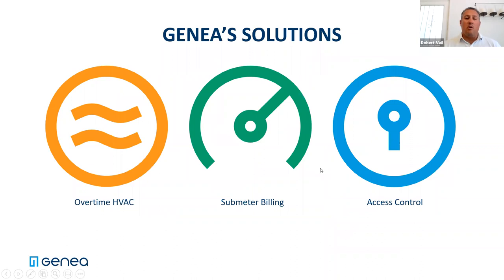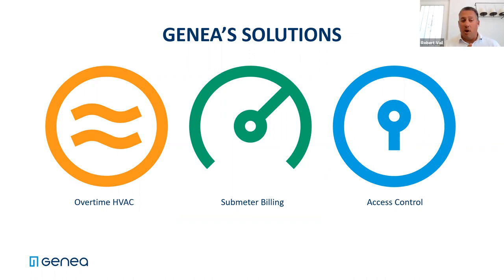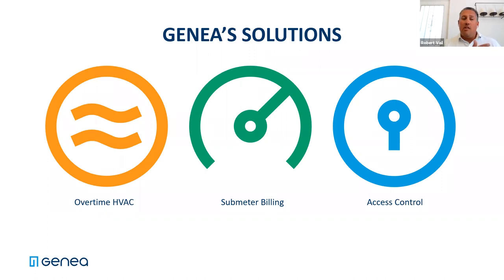We have three main solutions. The way we got our start was really selling the product to the commercial real estate industry to manage overtime HVAC requests and billings in multi-tenant office properties. If I'm a tenant in a building and it's late and I need air conditioning, I can pull up the Genea app, request the air - it turns it on, turns it off, and does all the billing at the end of the month.